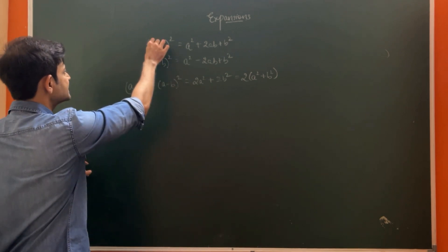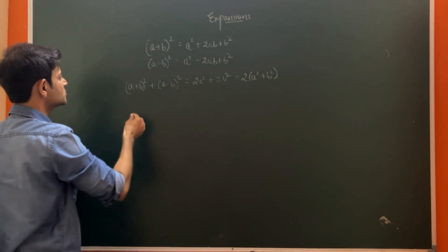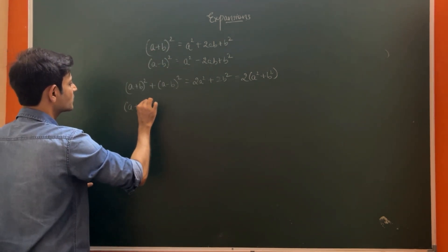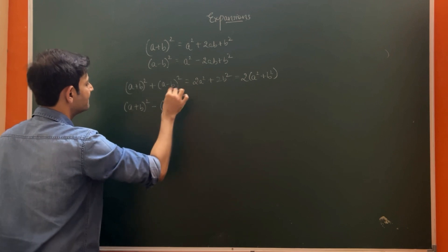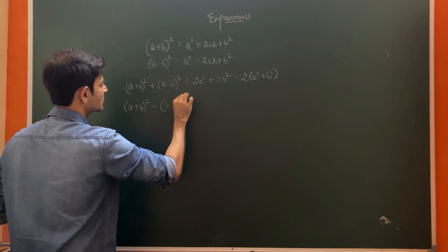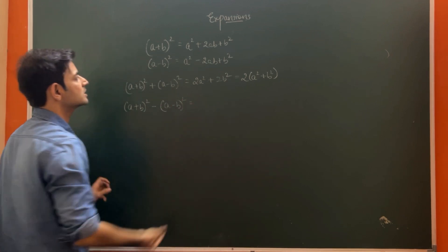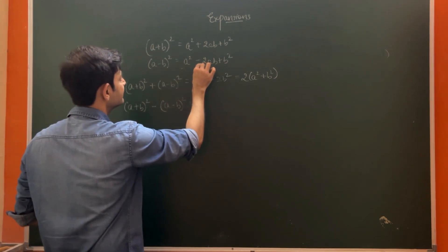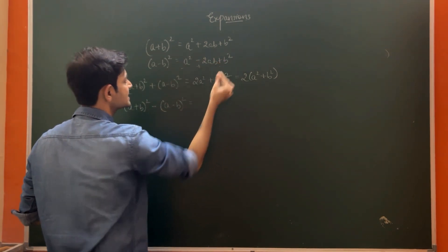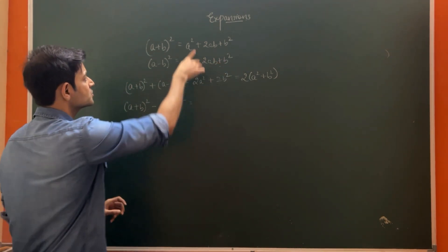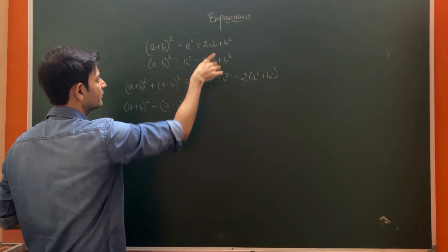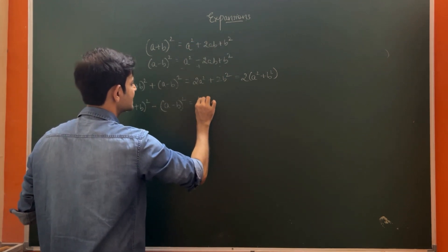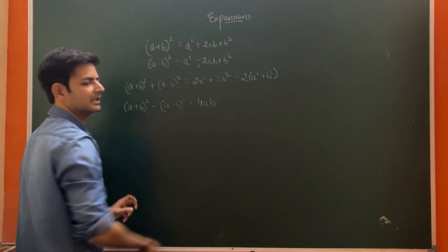Similarly, if we subtract these two — (a + b)² minus (a - b)² — the sign changes and the squared terms cancel. So we get 4ab as the answer.